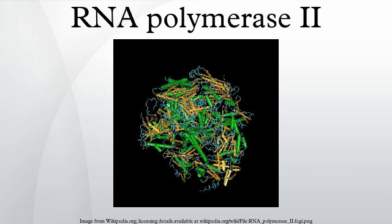DNA-directed RNA polymerase II subunit RPB1 is an enzyme that in humans is encoded by the POLR2A gene and in yeast is encoded by RPO21. RPB1 is the largest subunit of RNA polymerase II. It contains a carboxy terminal domain composed of up to 52 heptapeptide repeats that are essential for polymerase activity. The CTD was first discovered in the laboratory of C.J. Ingalls at the University of Toronto and by J.L. Corden at Johns Hopkins University.